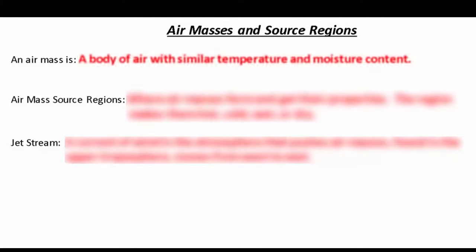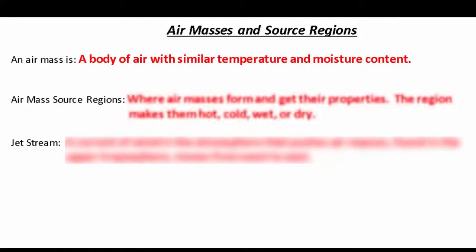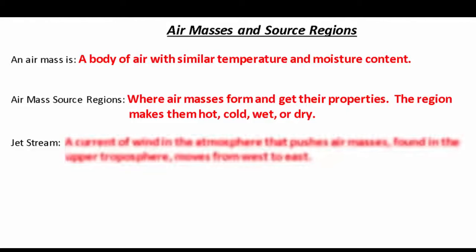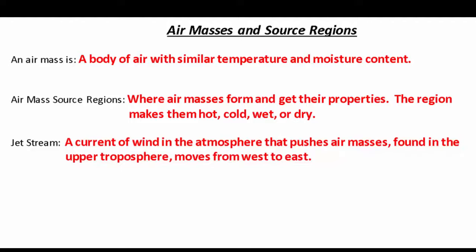Key vocabulary: an air mass is a body of air with similar temperature and moisture content. Air mass source regions are where air masses form and get their properties — the region makes them hot, cold, wet, or dry. The jet stream is a current of wind in the atmosphere that pushes air masses. It's found in the upper troposphere and it moves from west to east.